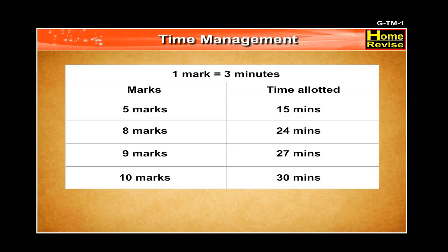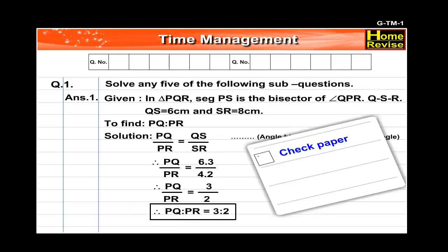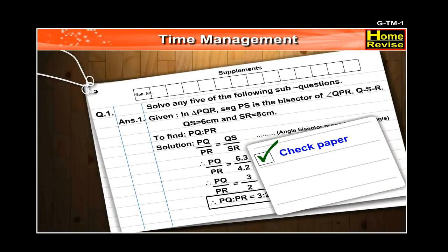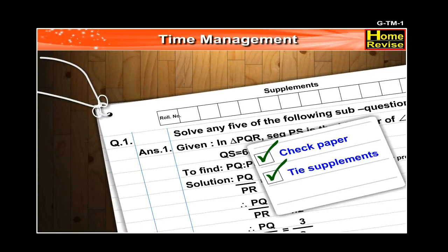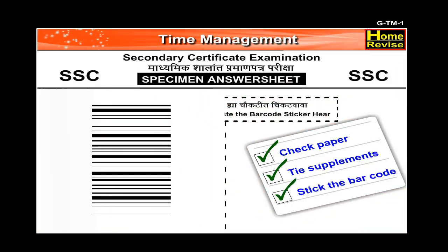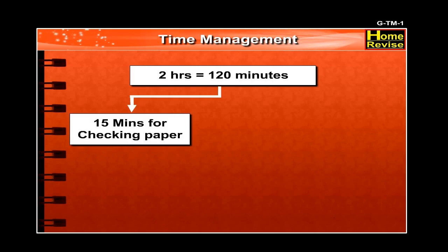In this way, in 120 minutes you will be able to complete the paper. But then what about checking the paper? Checking the paper is very important — this helps you to correct mistakes made while writing in a hurry. Also, don't forget you need time to fix your supplements or stick the barcode. Hence, you have to spare about 15 minutes from the 2 hours.